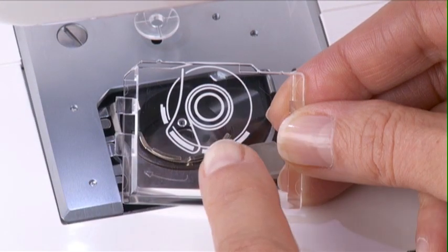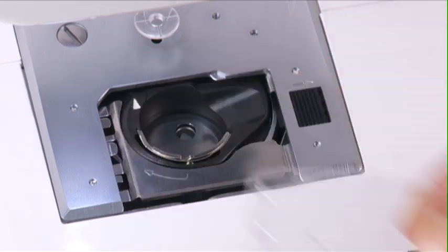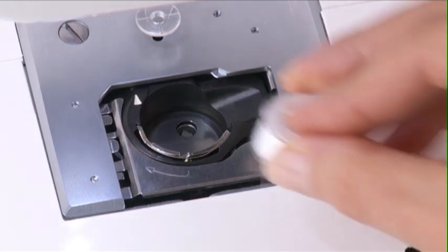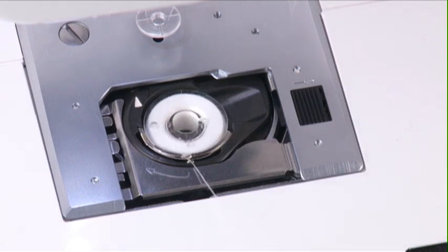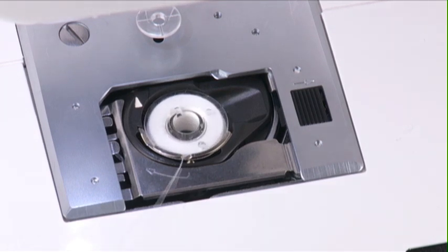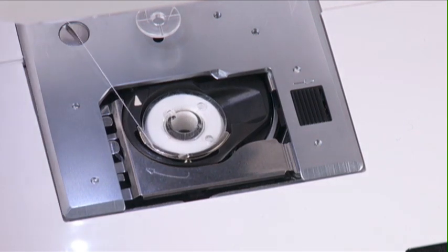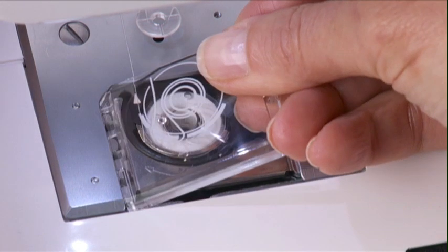Notice that the bobbin case cover has a diagram of the correct threading order of the bobbin thread. Place the bobbin in the bobbin holder so that the thread unwinds counterclockwise. Draw out the thread and slip it into the notch in the front. Gently pull the thread to the left through the tension spring blades until the thread slips into the groove on the side. Draw the free end of the thread to the back leaving a four inch tail. Reattach the bobbin case cover plate.